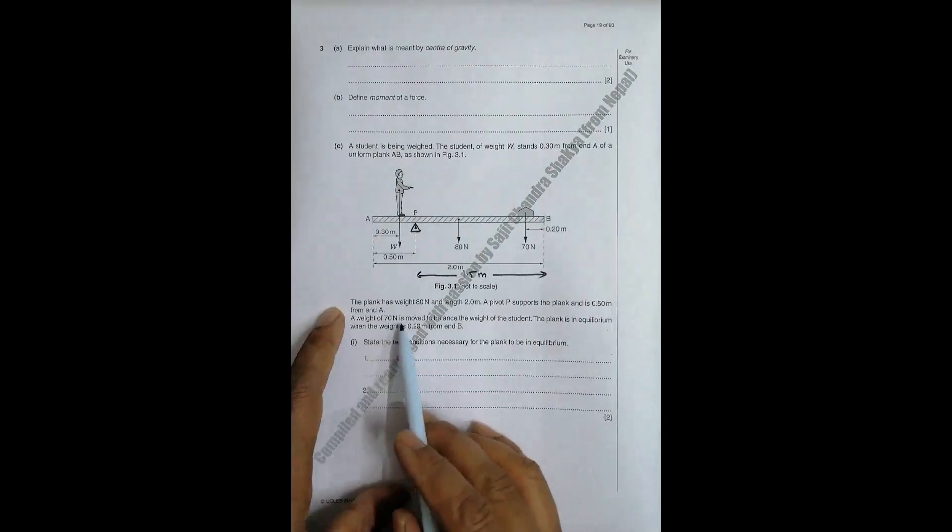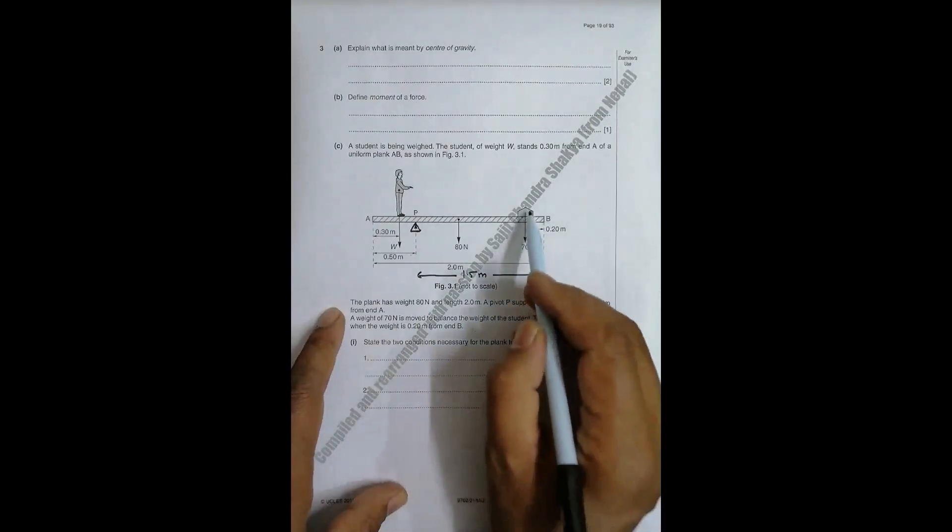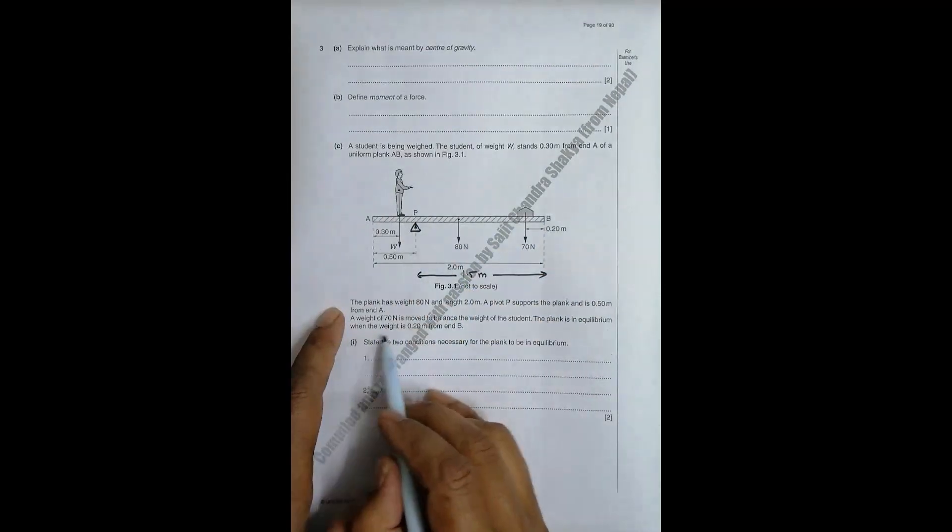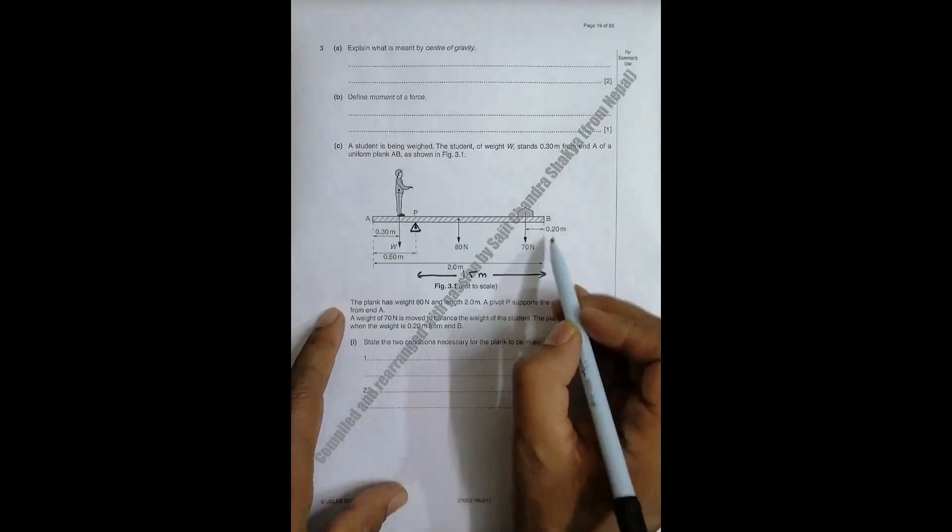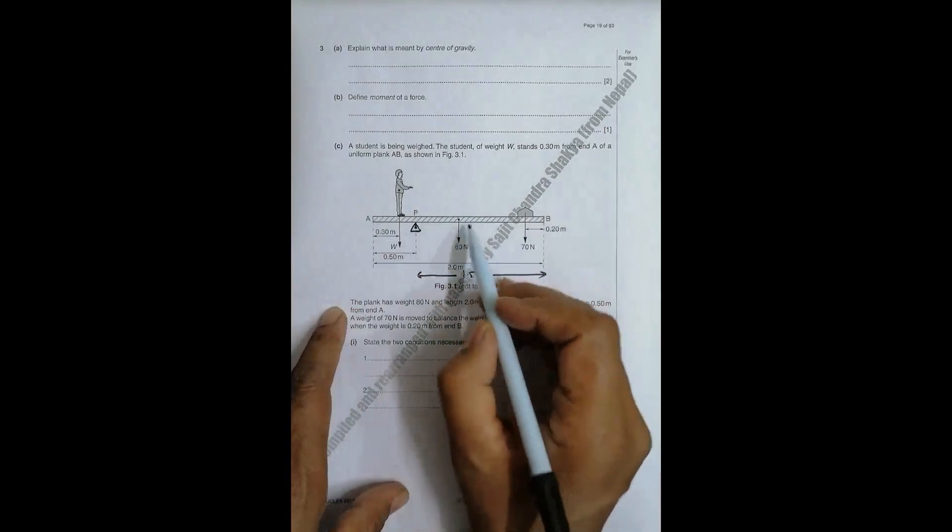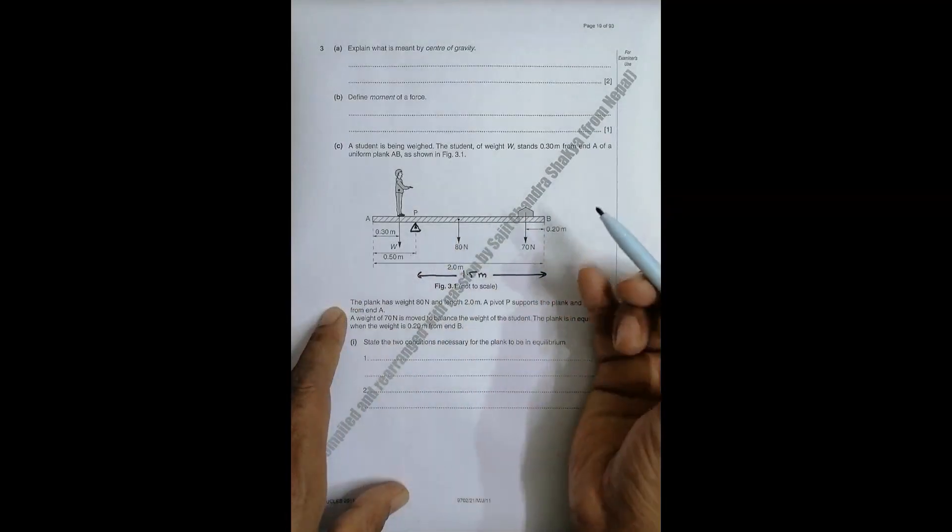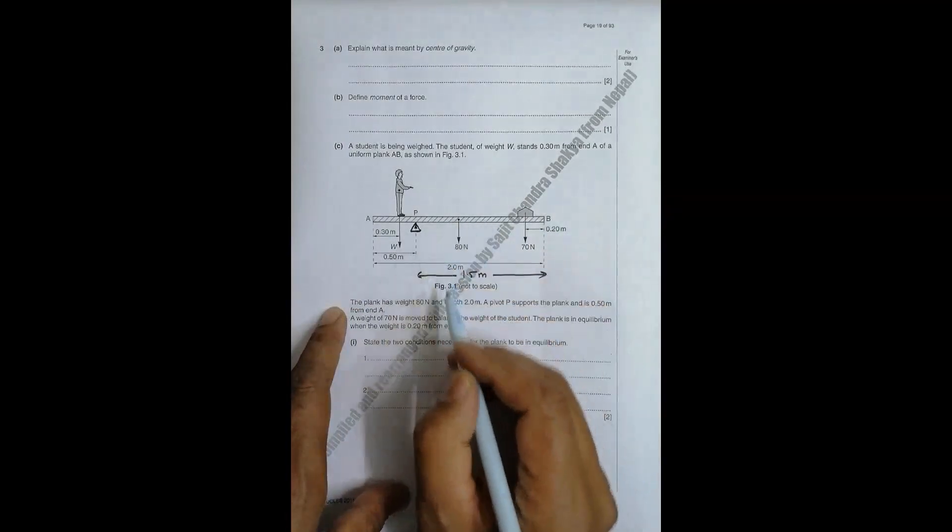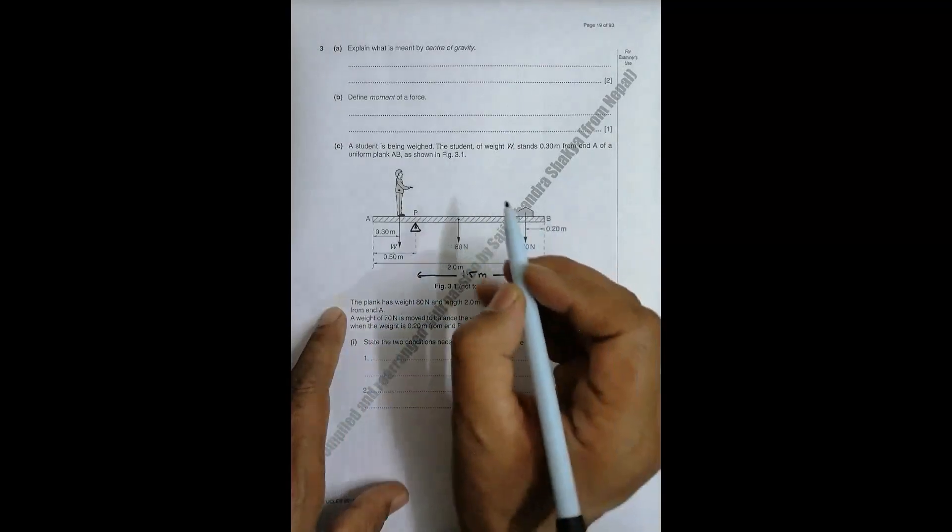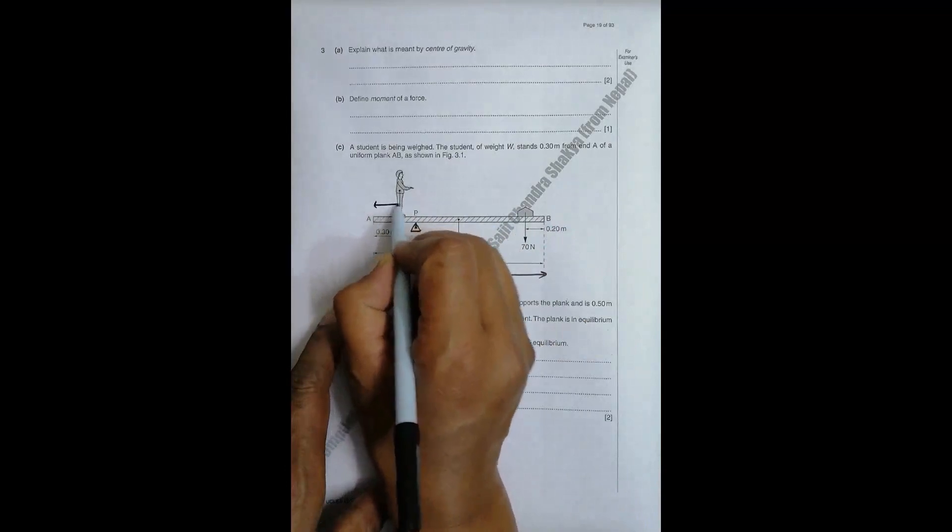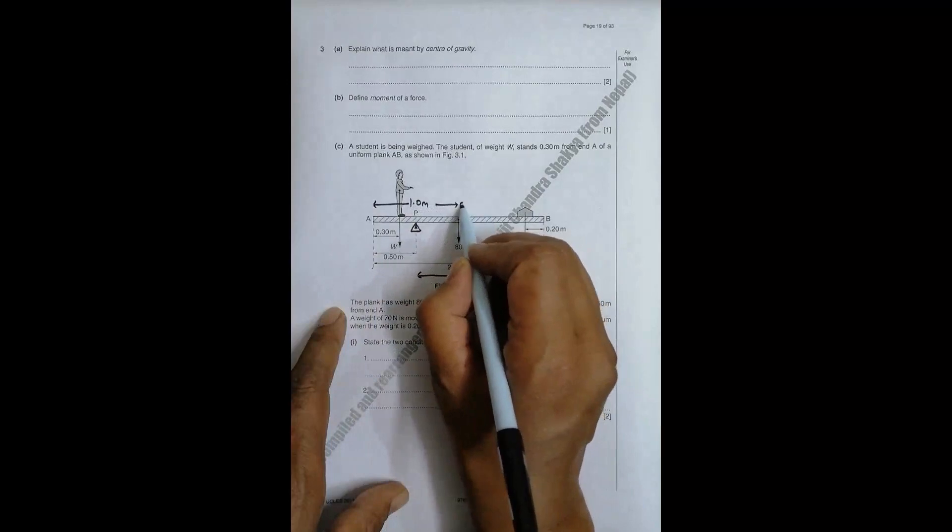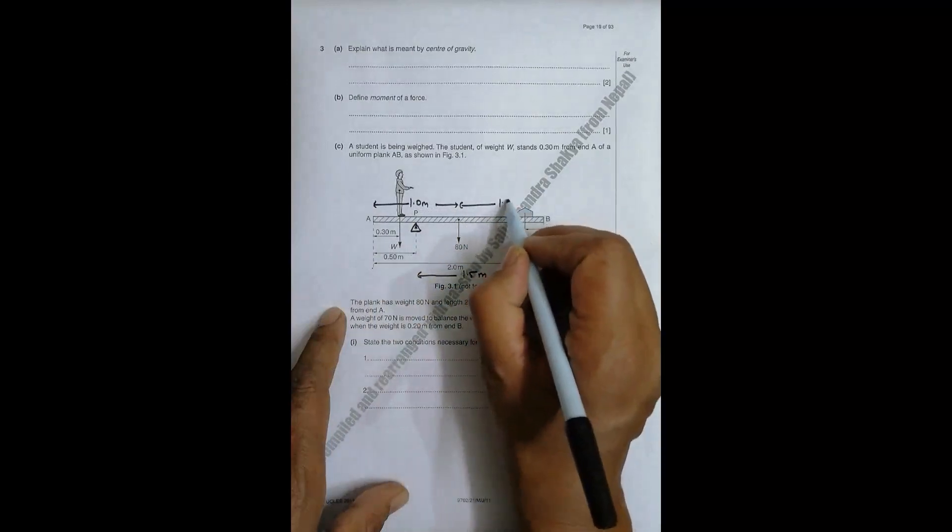A weight of 70 Newton is moved to balance the weight of the student. The plank is in equilibrium when the weight is 0.20 meter from end B. Now since this bar is uniform and this is the weight here, the distance from here should be 1.0 meters.